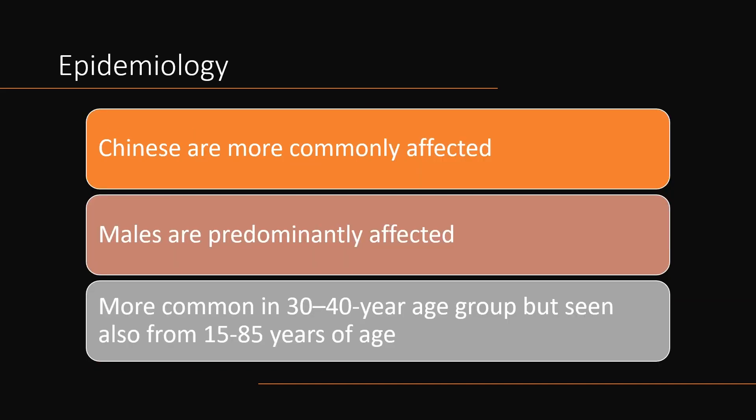Coming to the epidemiology, it has been seen that Chinese populations are much more affected. A very strong gender bias has been seen, since it is mostly found in males — particularly males between the age of 30 to 40 years, though it has also been seen from 15 to 25 years of age.